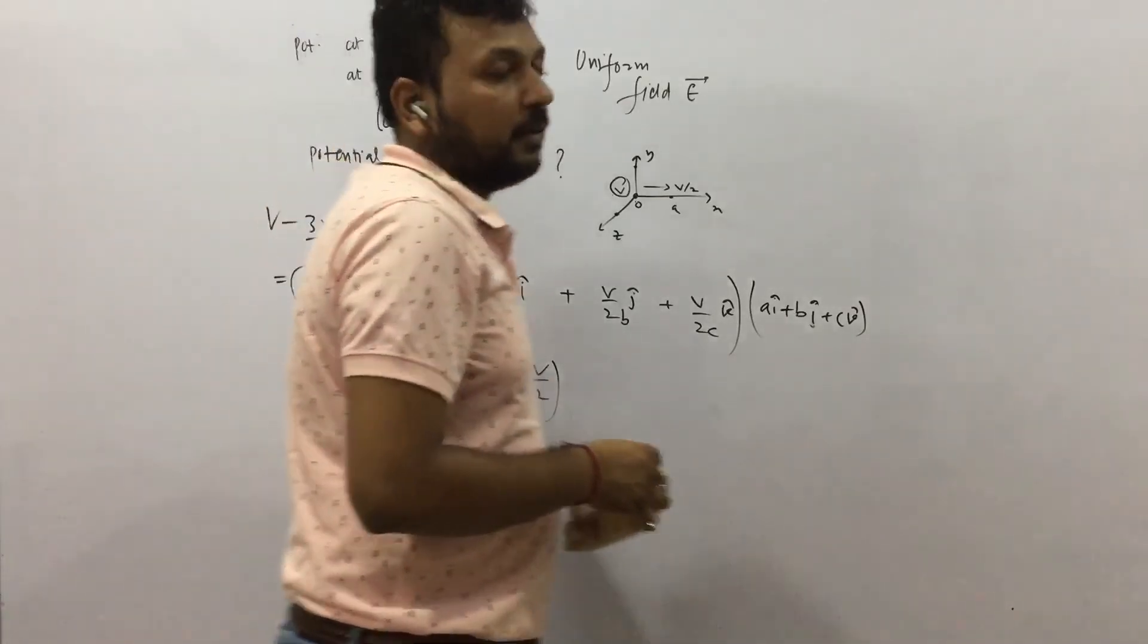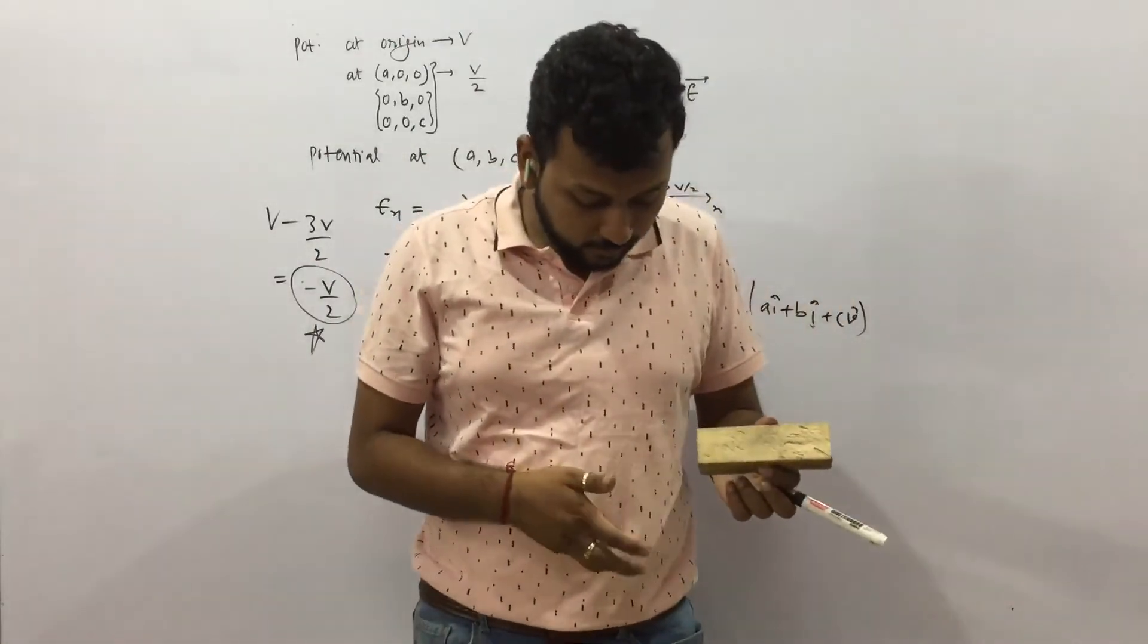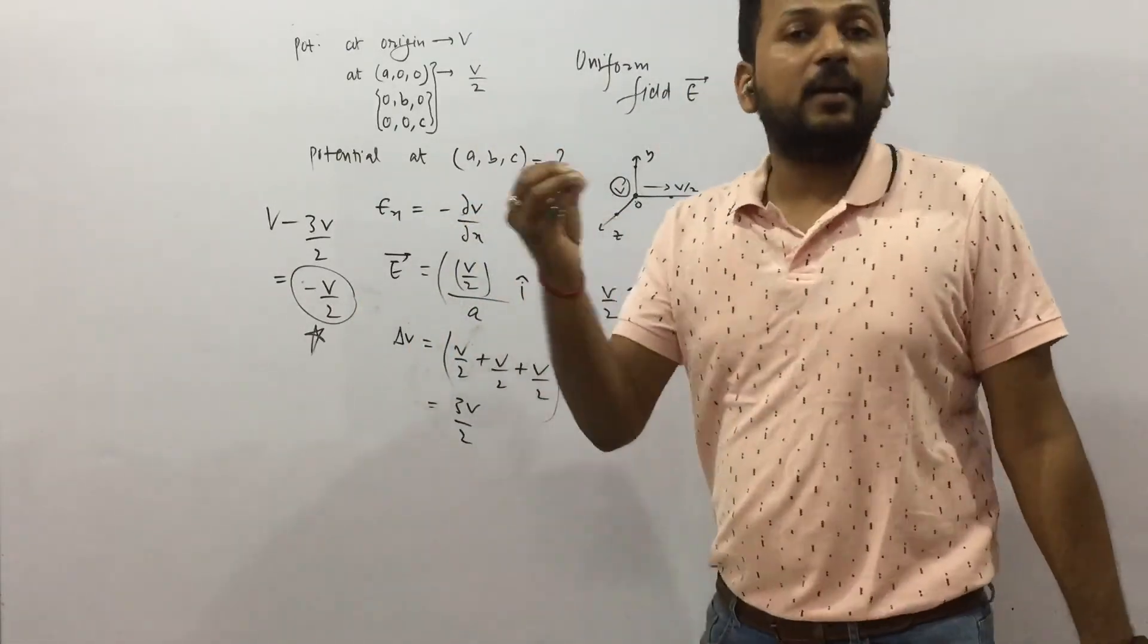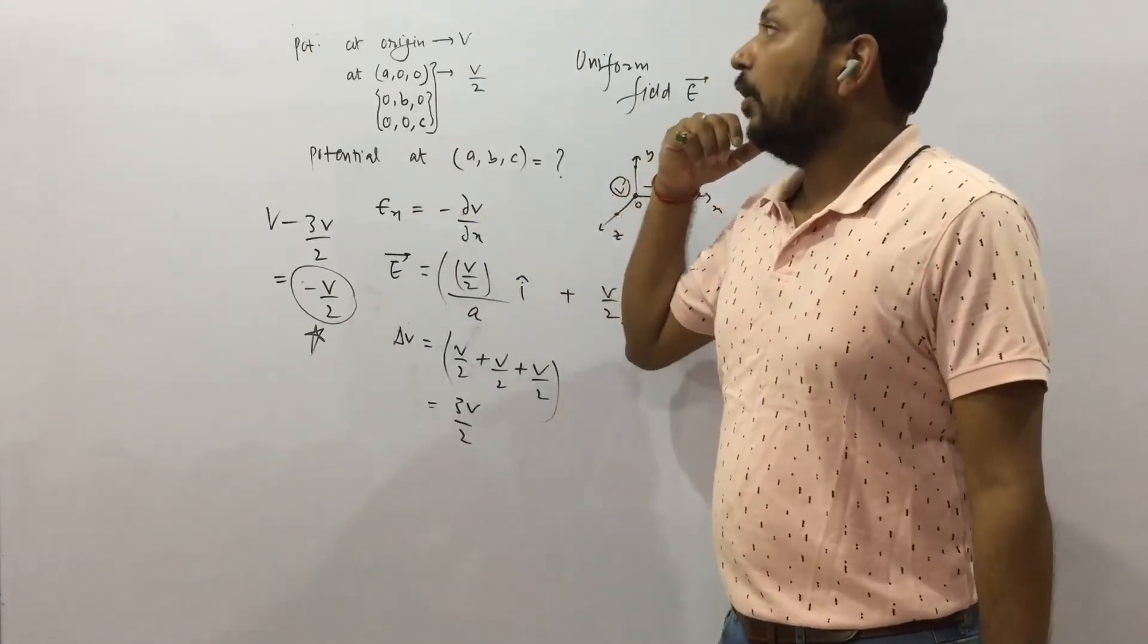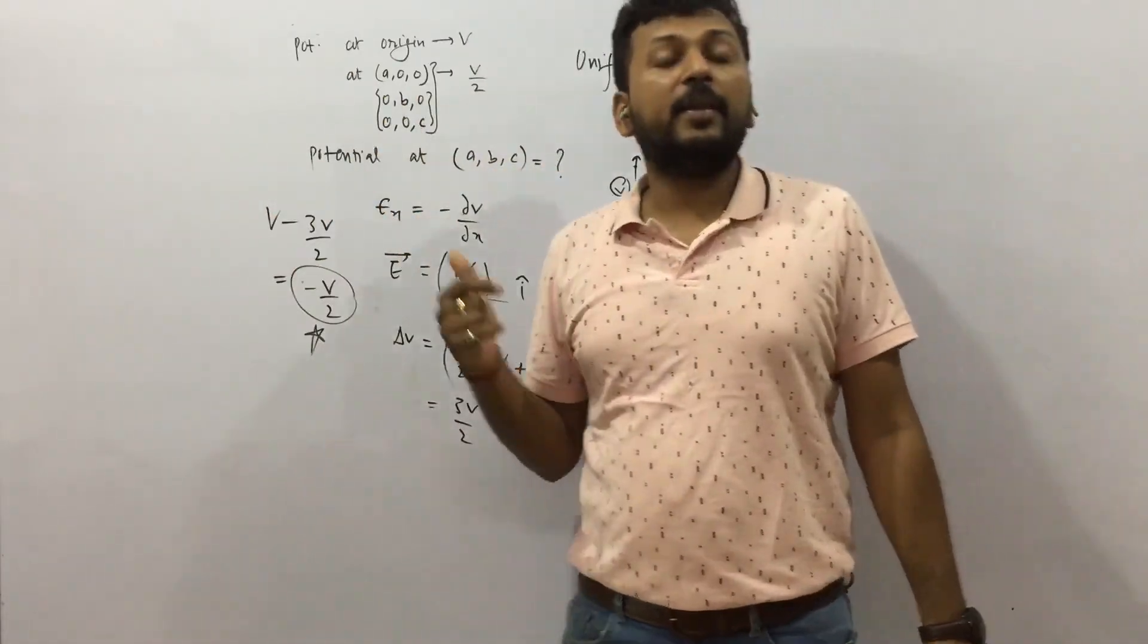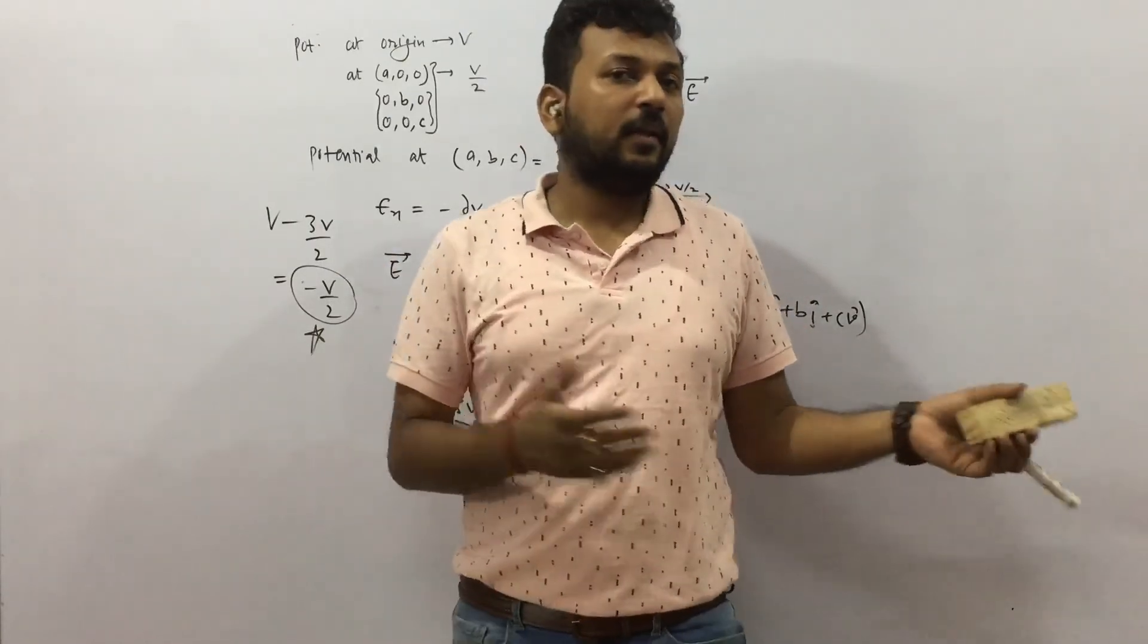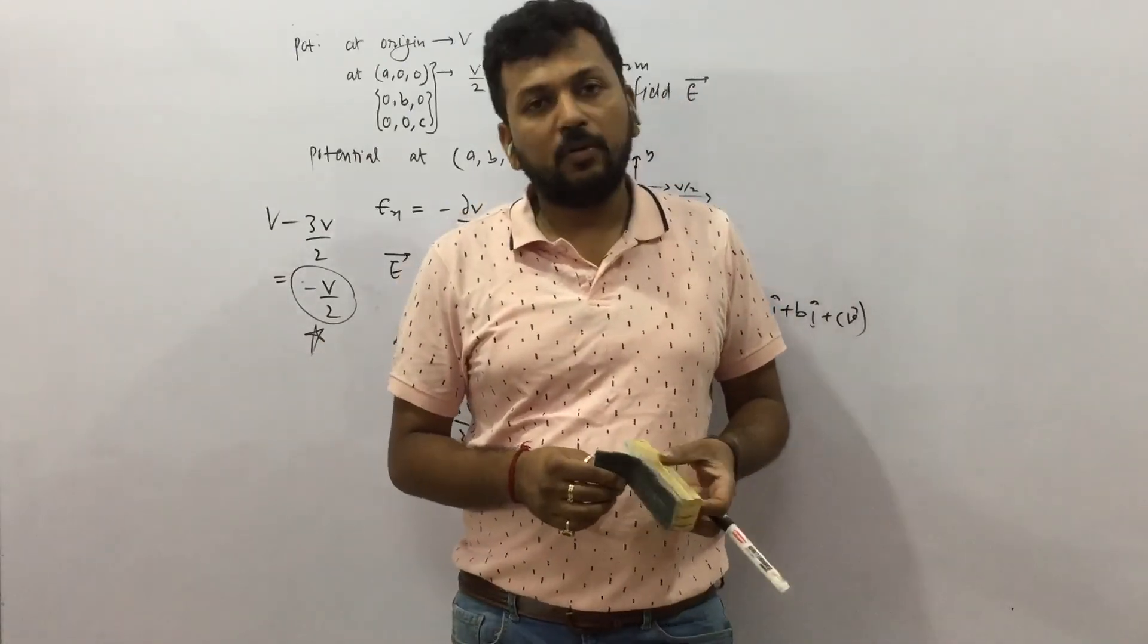I hope the question is clear. So from E is equal to minus dV by dR you only find the change delta V. You find the change. So this change is negative because electric field is in the direction of decreasing potential. So this is the final answer minus V by 2. I hope the question is clear. If you have doubts, leave a comment. You can share the video with all your friends. We'll be doing the next part in the next video. Very good question. So obviously these are the fixed lines that I say. So keep practicing and all the best for your exams.